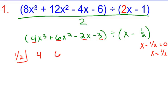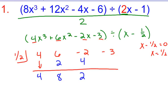And then I take each coefficient and list those for synthetic. So I'd have 4, 6, -2, -3. And then synthetic will be the same from here. So I'm going to bring that 4 down. 4 times 1/2 is 2. 6 plus 2 is 8. 8 times 1/2 is 4. -2 plus 4 is 2. 2 times 1/2 is 1. -3 plus 1 is -2.